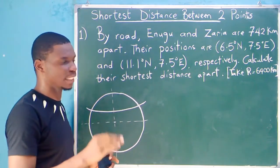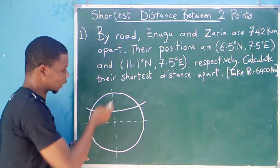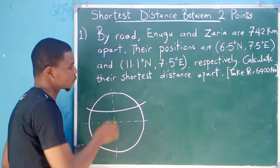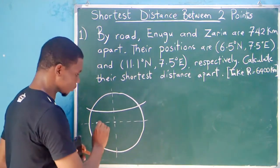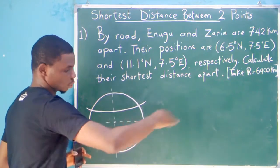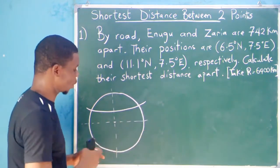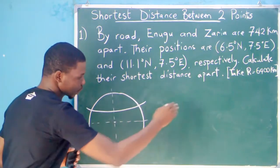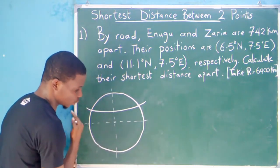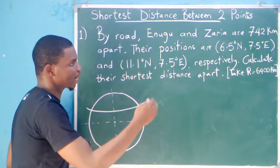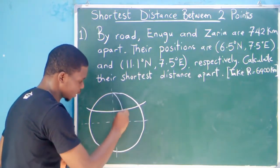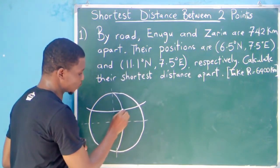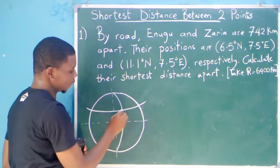And then 7.5 degrees east. Longitudes are the ones that go from up to down, all these lines that go from up down — they are the longitude. Your right-hand side is the east direction, while your left-hand side is the west direction. So from this line to this side is east, and this way is west. So 7.5 degrees east — we are going to mark it like so. We have indicated this first point, so this will be where Enugu will be, this point here where they meet.